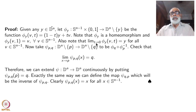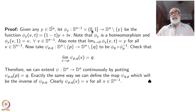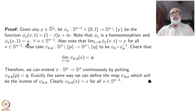Also note that when t tends to 0, φ_y(v, t) tends to y, so the limit is y for all v in S^(n-1). If we extended it to S^(n-1) × [0,1], all points would map to y, so it would no longer be a homeomorphism. Now define ψ_{pq}, which depends on two points p and q, as a homeomorphism from D^n minus {p} to D^n minus {q}.